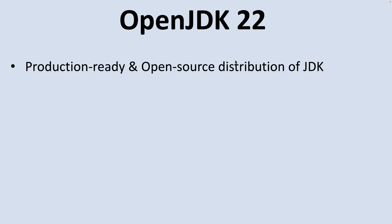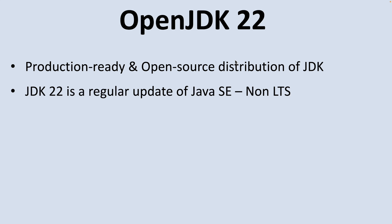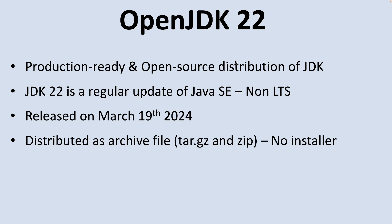So what is OpenJDK? OpenJDK is a production-ready, open-source distribution of the Java Development Kit. JDK version 22 is a regular update of the Java SE platform — it is a non-long-term support release (non-LTS). OpenJDK 22 was released on March 19th, 2024, and is distributed as an archive file such as tar.gz or zip — there is no installer for OpenJDK.